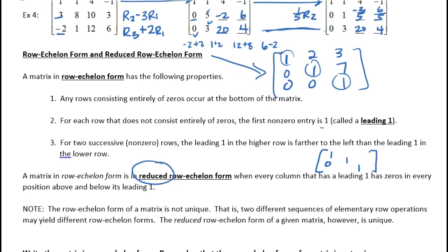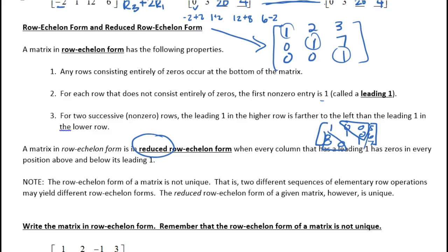In reduced row echelon form, you have zeros everywhere else — above and below those ones. You can have the row of constants, but basically you have triangles of zeros above and below your diagonal ones. Two different sequences of elementary row operations may yield different row echelon forms, but the reduced row echelon form is unique.